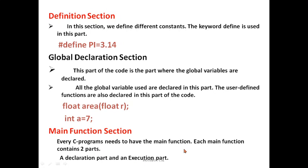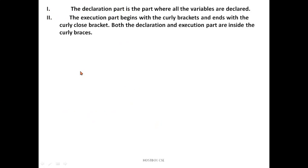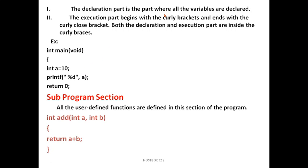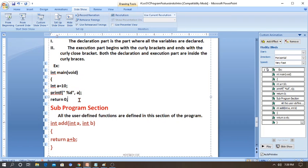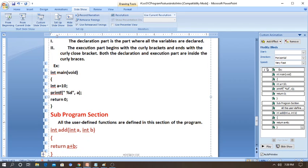Then the main function. Every C program needs to have the main function. Each main function has two parts: the declaration part and the execution part. To start your C program, you begin with the preprocessor directive or header file. After that, you start with the main function: int main() or void main(). Open brace — the declaration part is where all variables are declared. The execution part begins with the open curly brace and ends with the close curly brace. Both declaration and execution parts are inside the curly braces.